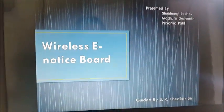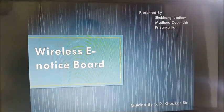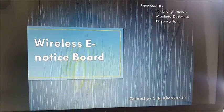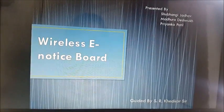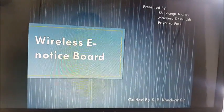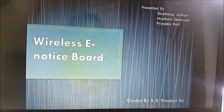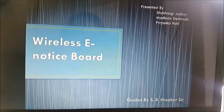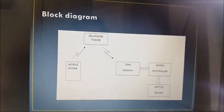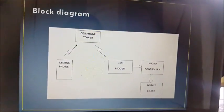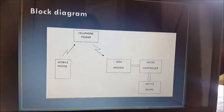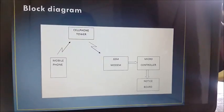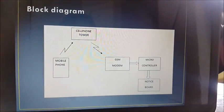Hi everyone. We are students of Electronics from Walshan College of Engineering. We are going to demonstrate our project: Wireless Electronics Notice Board. First we will see the block diagram. Basically, the Wireless Electronics Notice Board has two sections: Transmitter and Receiver.